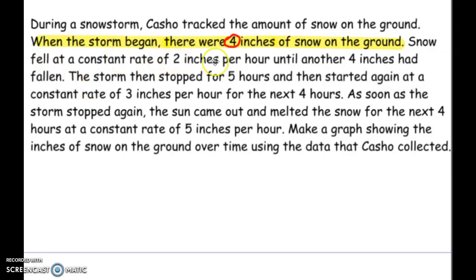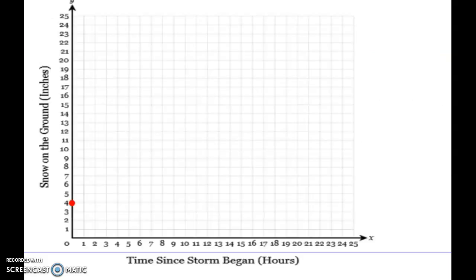When the storm began, there was four inches of snow on the ground. So this four inches of snow is where it begins. On your graph, you start on the y-axis here right at four. I'll put a dot there to show you where I'm going to start. Now if it says zero, then you start here at zero.